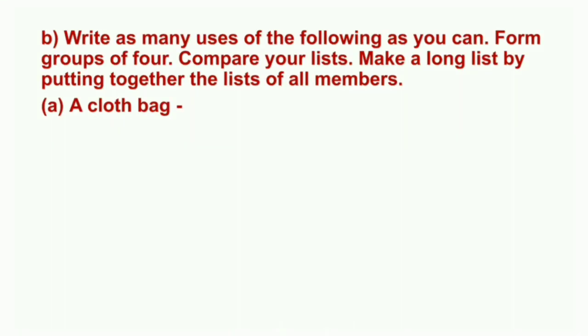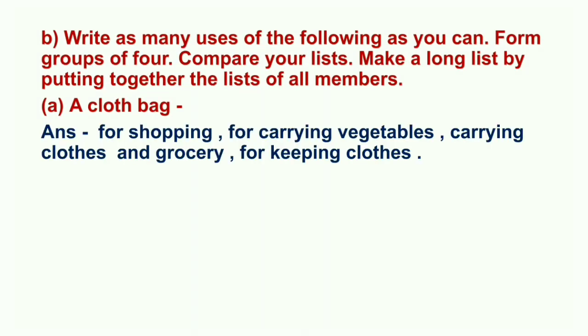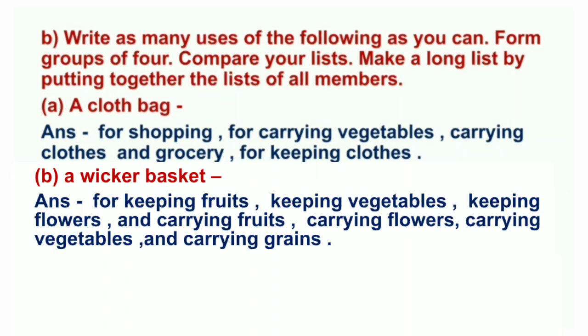Answer A: A cloth bag — uses: for shopping, for carrying vegetables, carrying clothes and grocery, for keeping clothes. B: A wicker basket — uses: for keeping fruits, keeping vegetables, keeping flowers, carrying fruits, carrying flowers, carrying vegetables, and carrying grains.